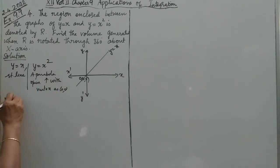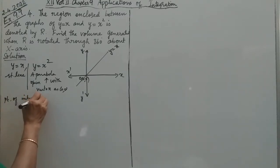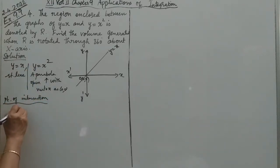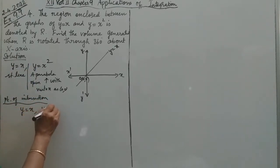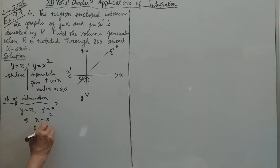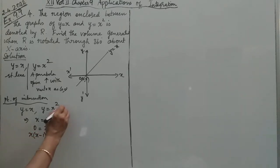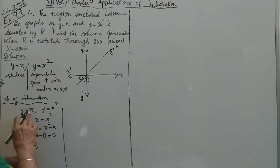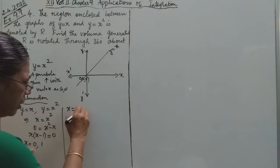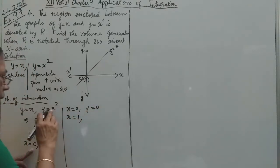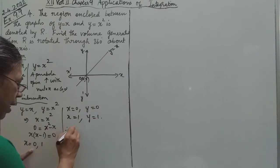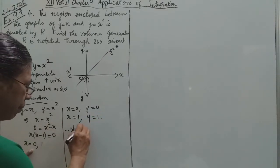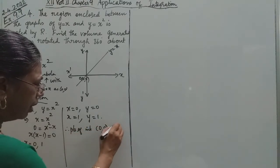To find the points of intersection, we set y equals x and y equals x-squared equal to each other. This gives x-squared minus x equals 0, so x(x-1) equals 0, giving x equals 0 or x equals 1. Therefore the points of intersection are (0,0) and (1,1).